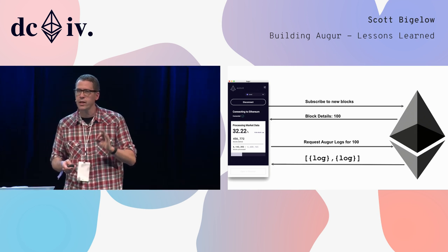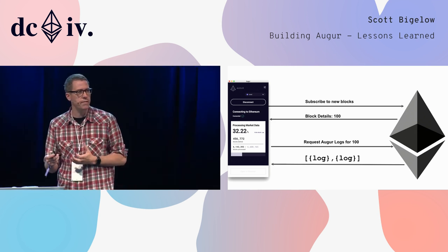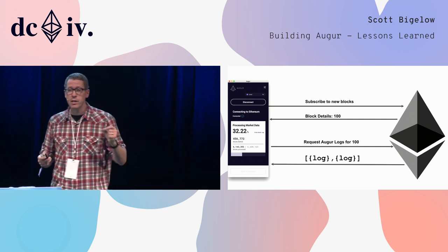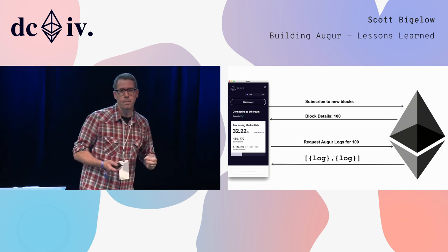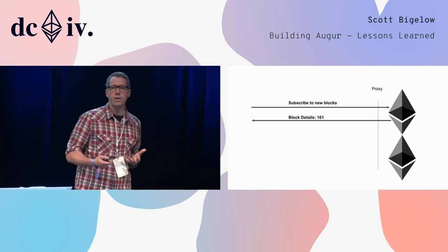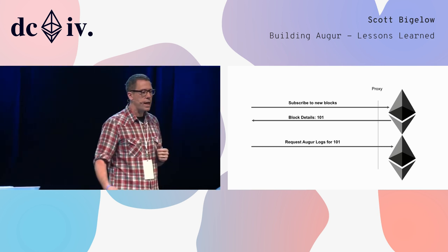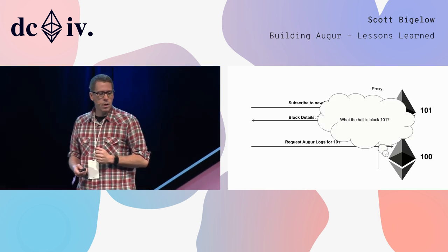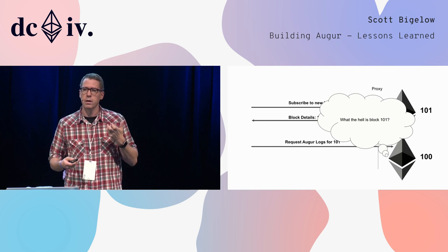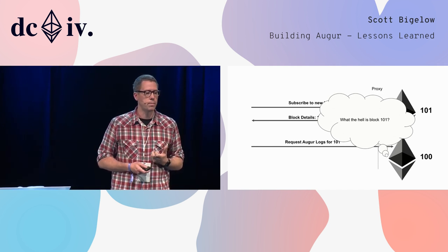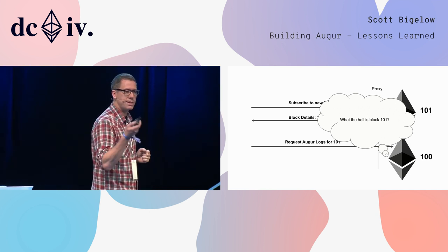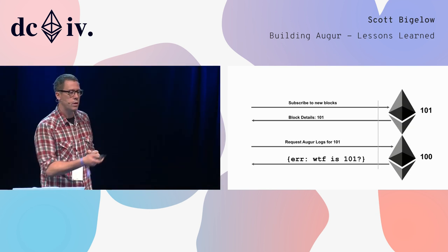In order to have more than one server, you're going to need a proxy. So let's walk through this conversation: hey, please give me a new block — here's block 101. Great, can I get logs for block 101? The system that receives the second request doesn't necessarily have the same perspective of the Ethereum network as the one that delivered block 101. It thinks to itself: what the hell is block 101? But the problem is it doesn't say that. It says: empty array.